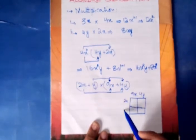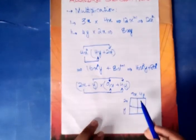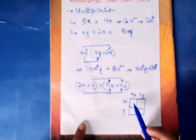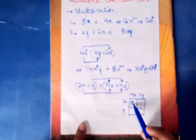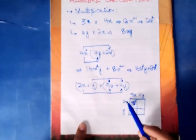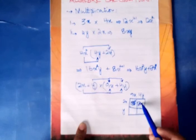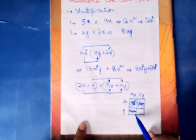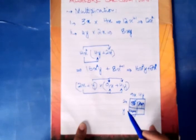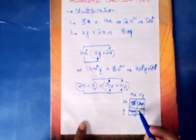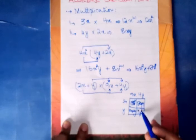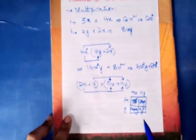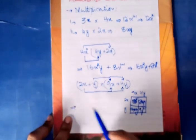Then I will multiply: 2 times 9 is 18, and x times x is x square. 4 times 2 is 8xy. 9 times 1 is 9xy, and y times 4y is 4y square.